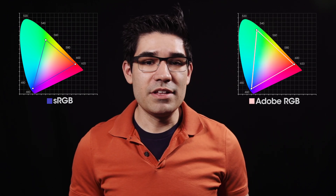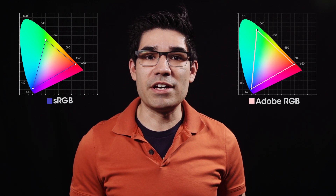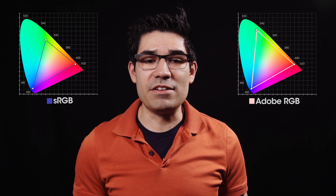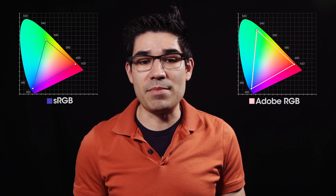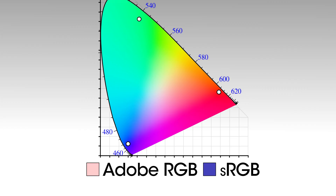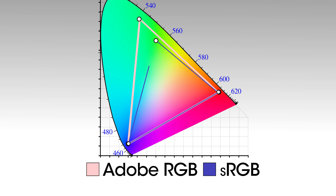So now that you know how to read the CIE chart, let's look at some real color spaces. This one is sRGB — the color space for almost all computers, smartphones, and even some televisions. And here's another one. This one is called AdobeRGB, another commonly used color space for photos and wide gamut monitors. Now if we put both color spaces on the same chart, it's easy to see that AdobeRGB is able to display more colors than sRGB.